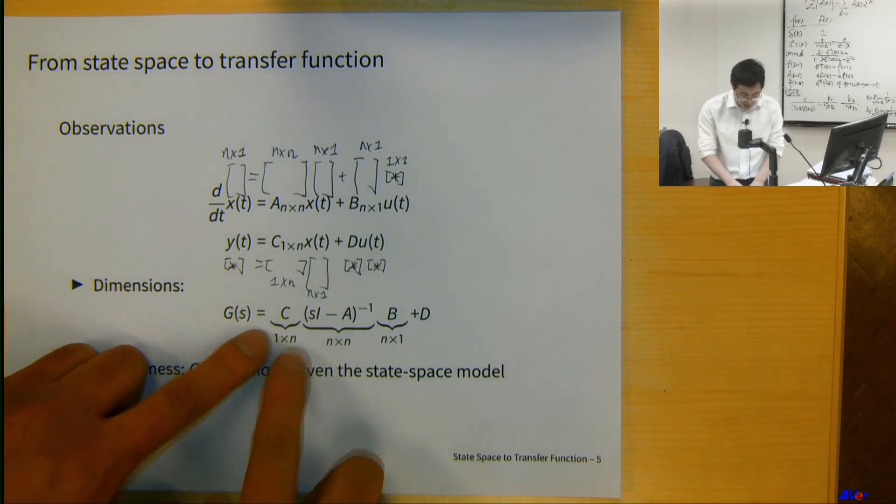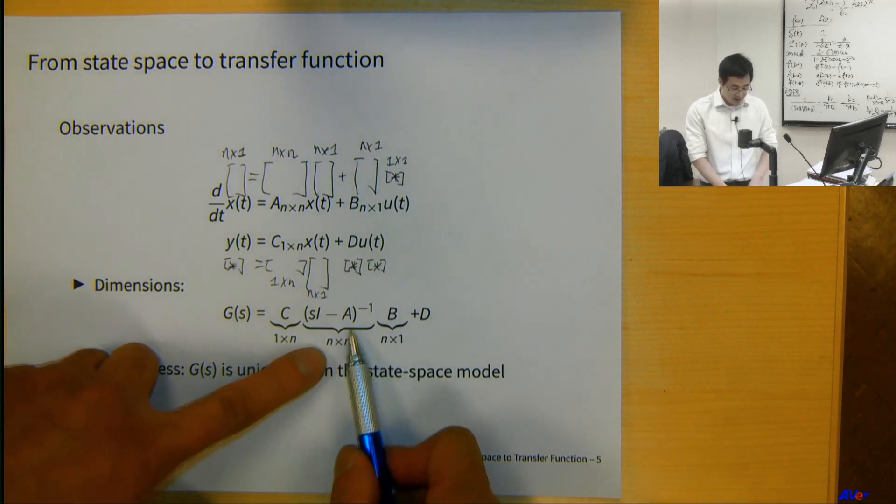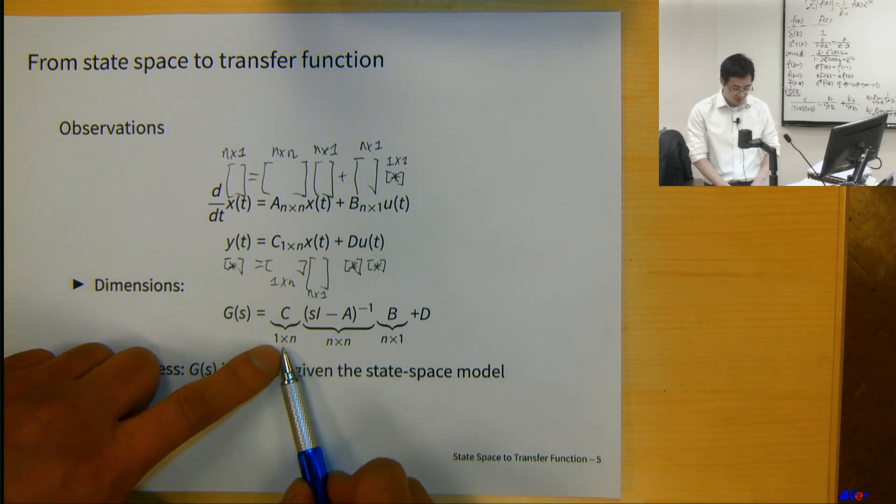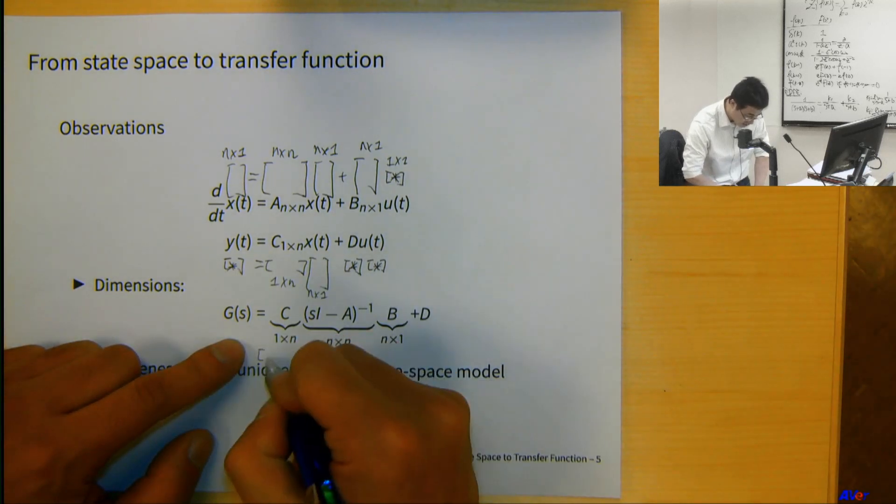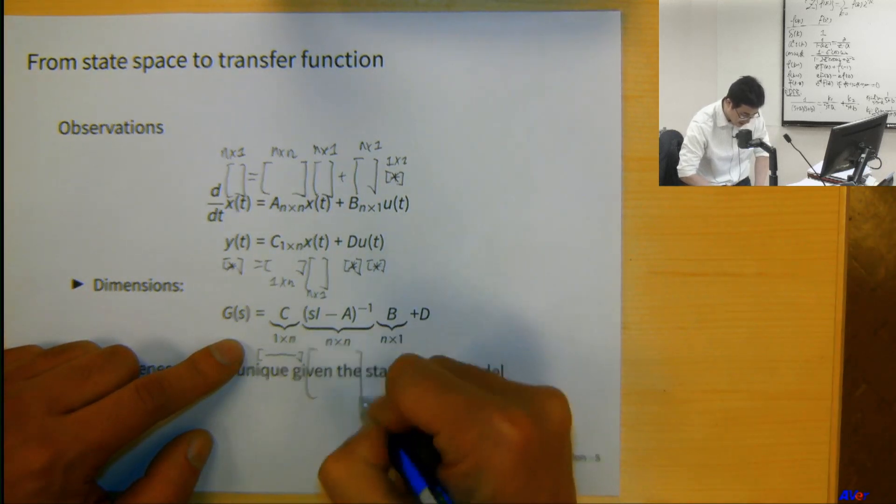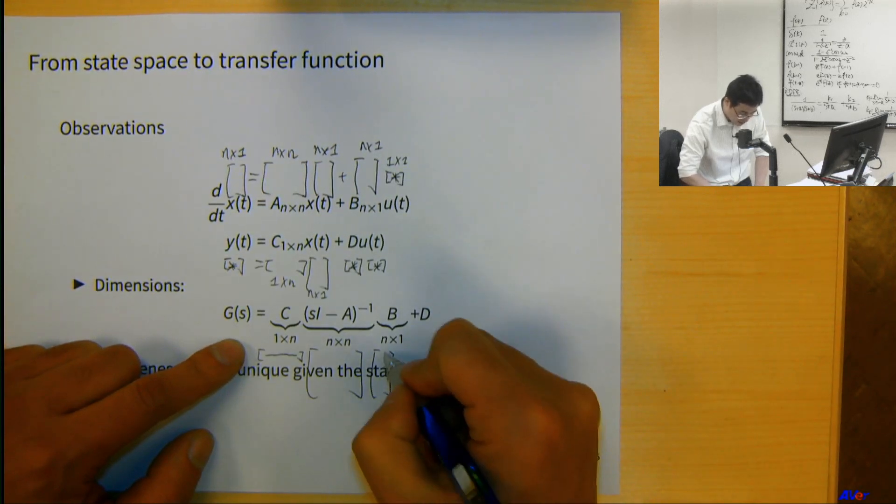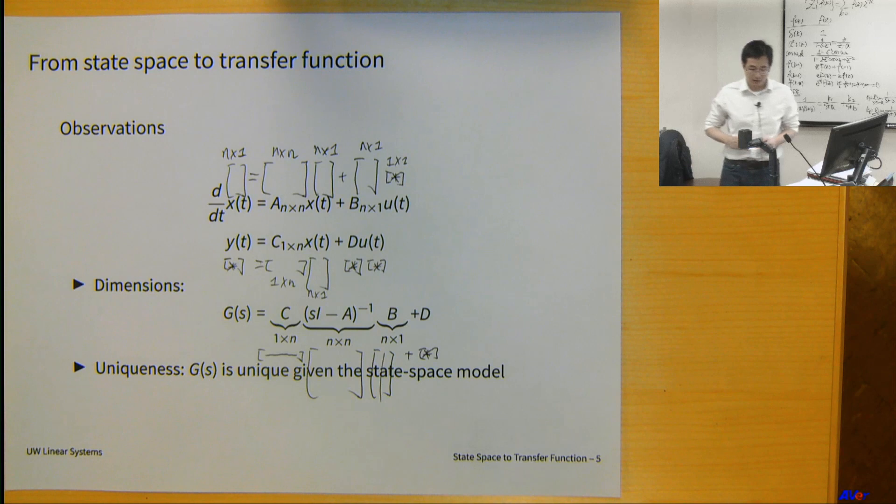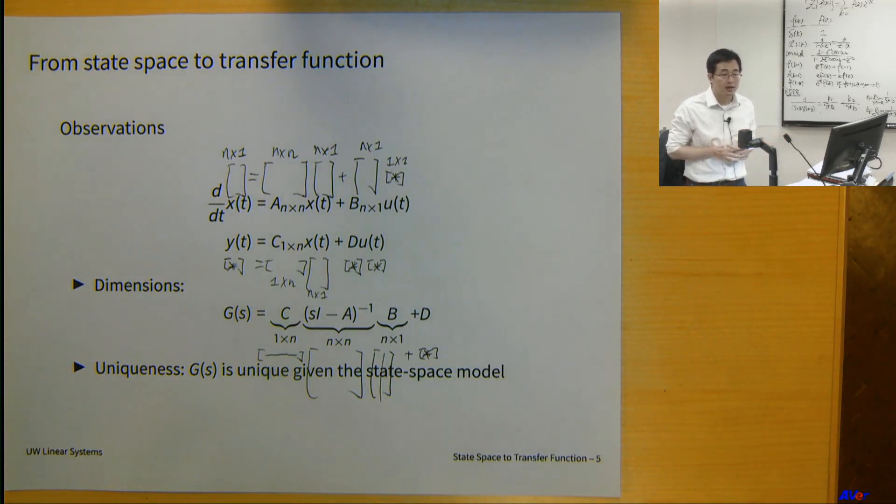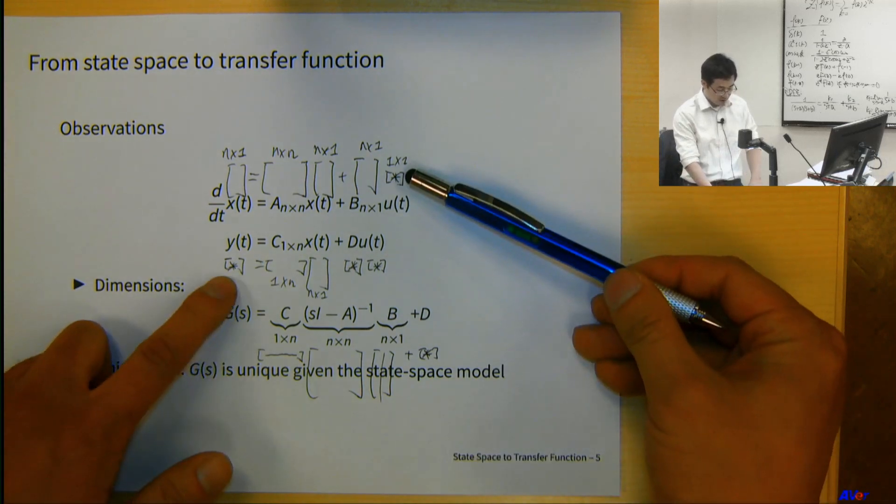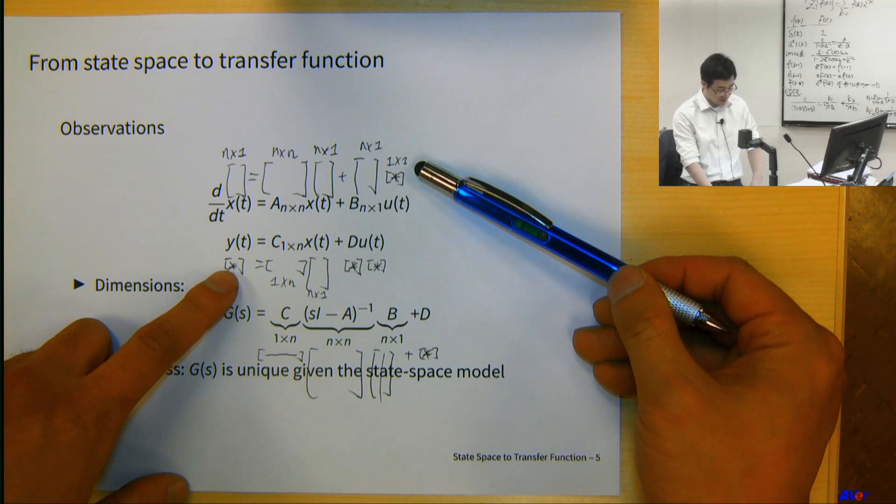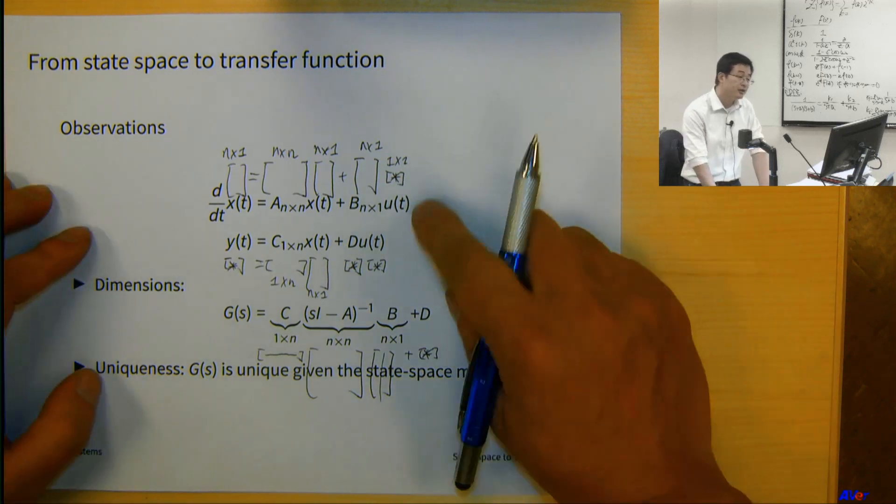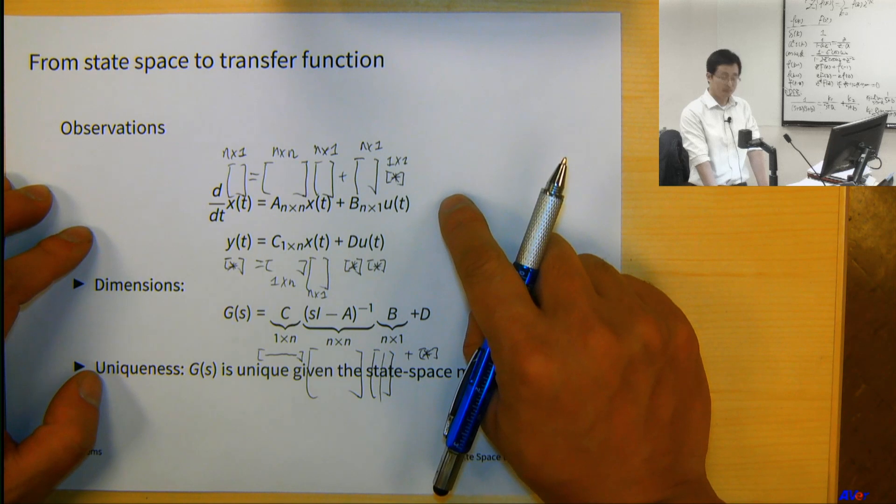The formula we derived is C(sI - A)^{-1}B plus D. A is n by n, so this whole thing is going to be n by n. B is n by 1, and C is 1 by n. So this looks like a 1 by n matrix, a wide matrix, multiplying a square matrix, and then a vector, a skinny matrix, plus D is a scalar. So in this case, is G a scalar or a vector? Scalar, right? This is a scalar transfer function if my input is one dimension and my output is also one dimension. It's going to be different if my input is two dimension and my output is two dimension, but the same logic will apply.